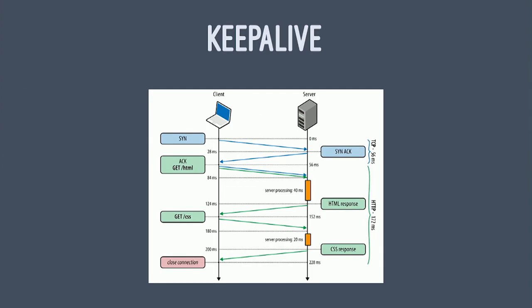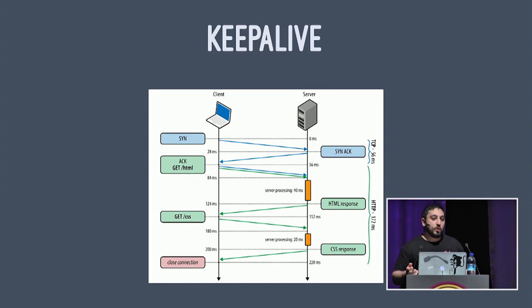One of the things brought into HTTP 1.1 was the idea of keep-alive: you can connect to a server and keep that connection open for multiple requests. So you still request the HTML file, then the CSS file, but you save yourself the extra round trip of reconnecting each time — until eventually one of the client or server says 'okay, I'm done, close the connection.'